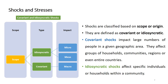We can classify shocks based on their scope or origin. Sometimes we differentiate shocks and stresses as covariant or idiosyncratic. Covariant shocks impact a large number of people in a given area — large numbers of households, communities, regions, or even entire countries. We link covariant shocks to a macro level, where the impact can happen across a huge number of people and communities.